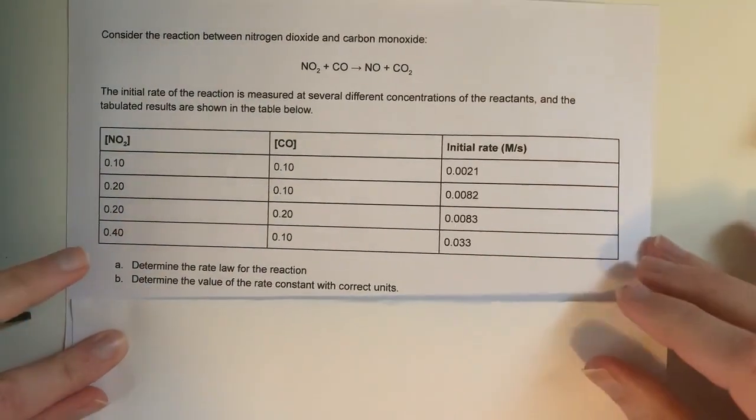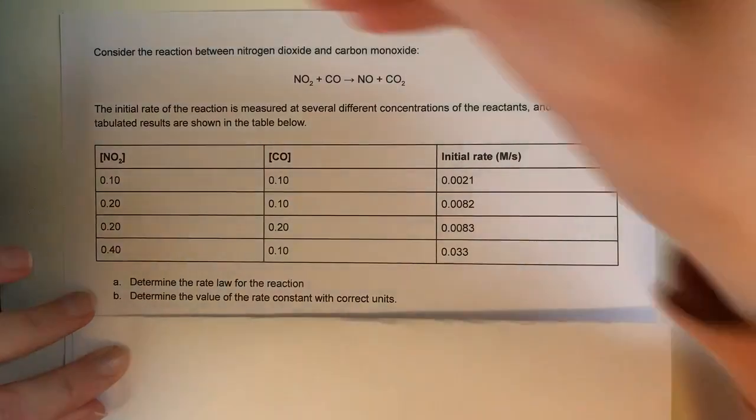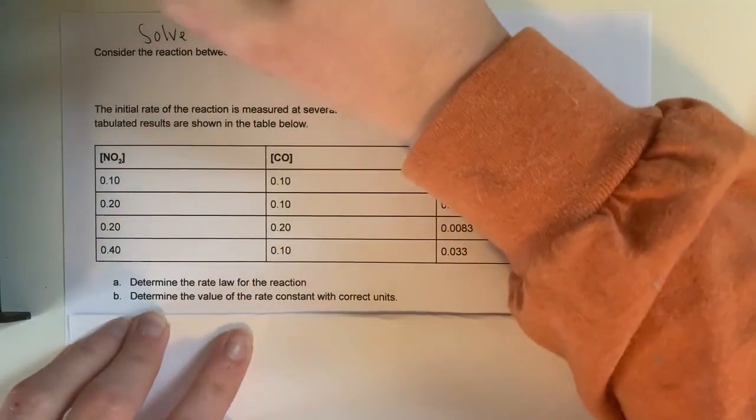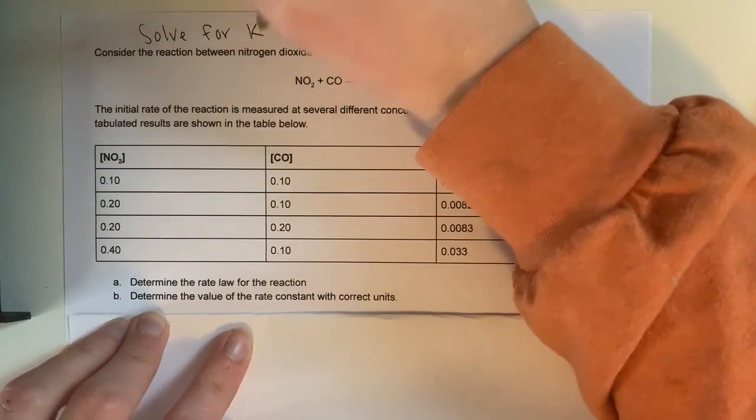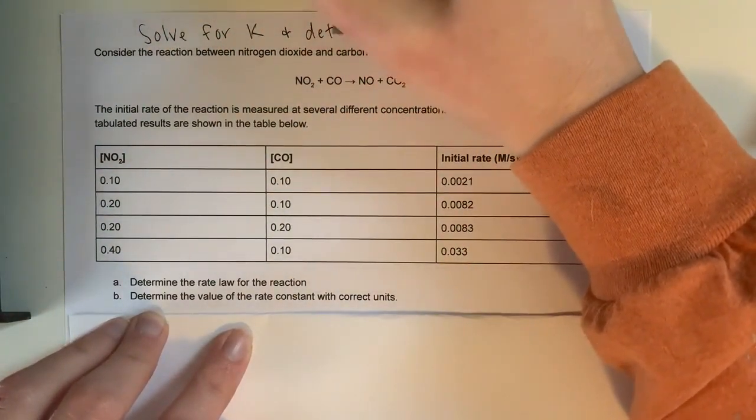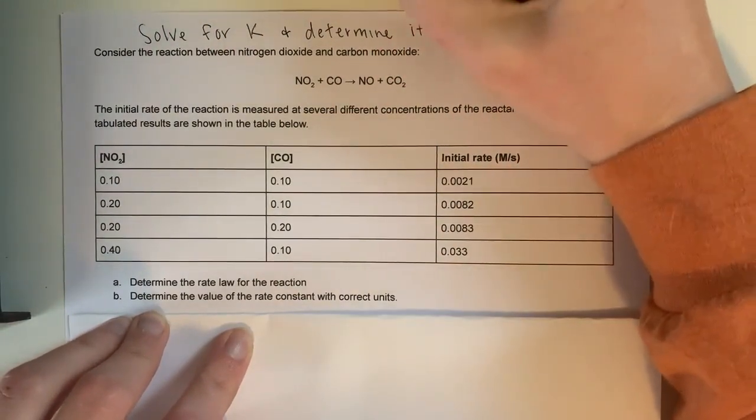So in this video, we are going to look at a couple examples to figure out how to solve for K, which is the rate constant, and determine its units. And that's the part we're going to focus on in this video.